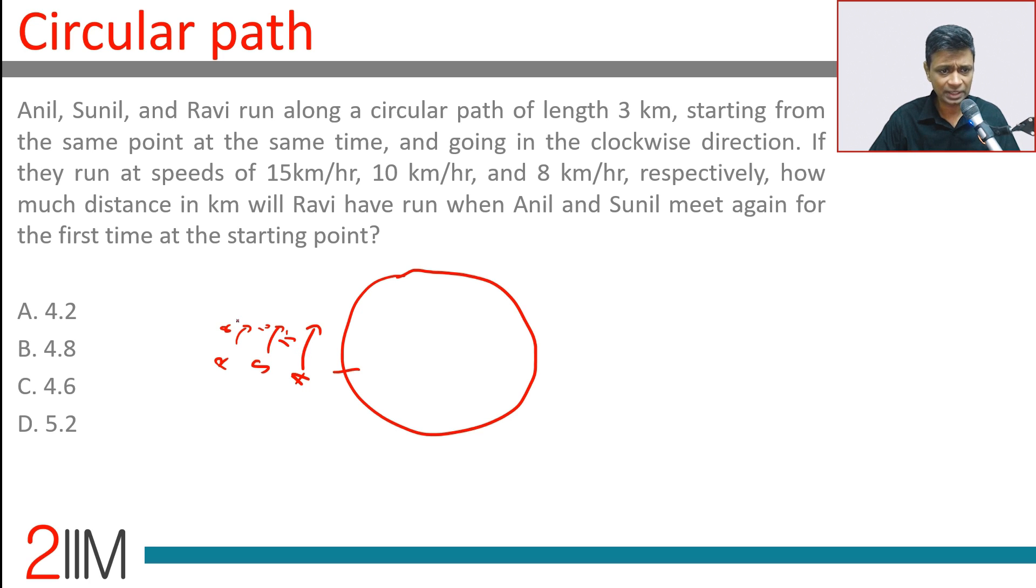So 15 and 10 meet again, how much would Ravi have run? So we have to see when will Anil and Sunil, A and S—I keep getting confused with the names—meet at the starting point for the first time.